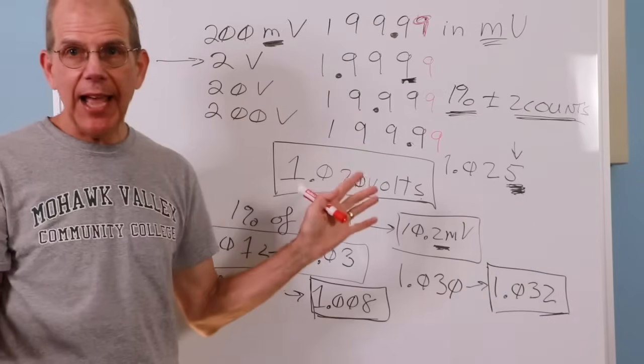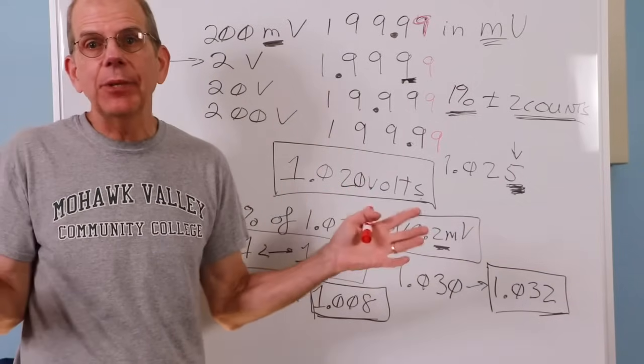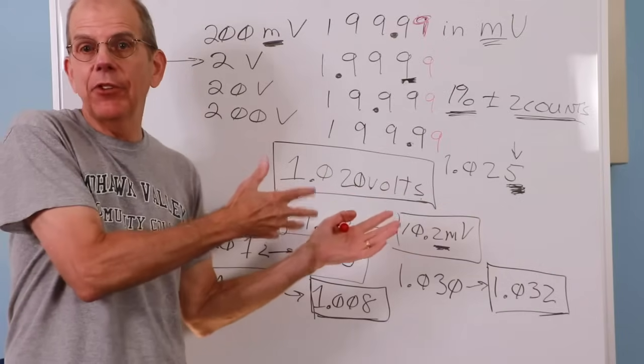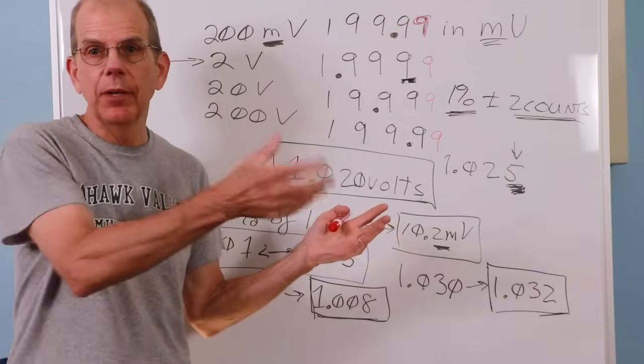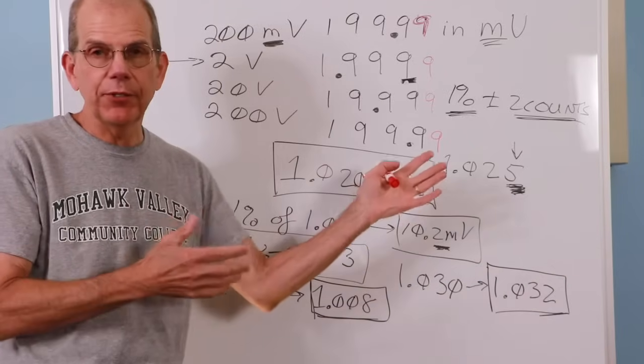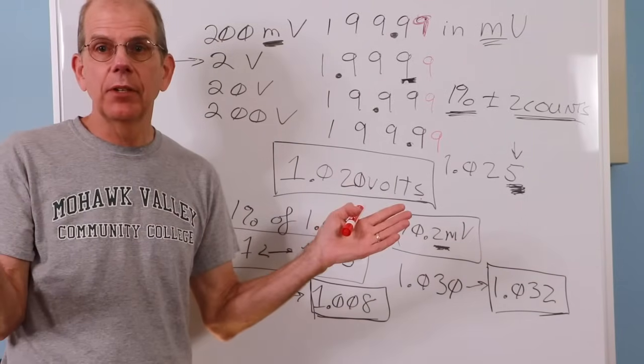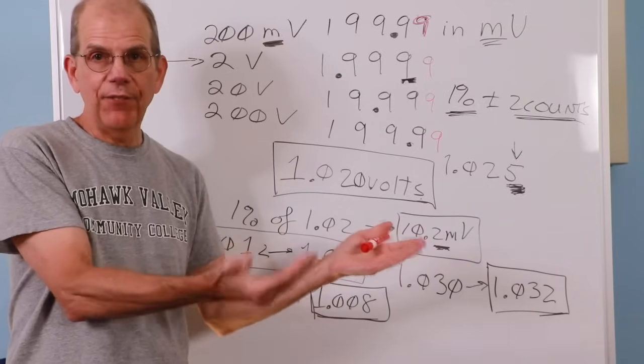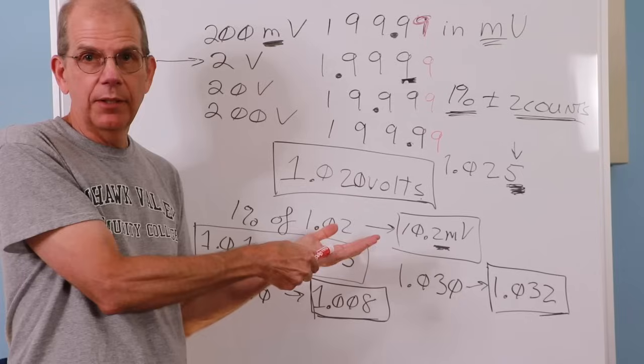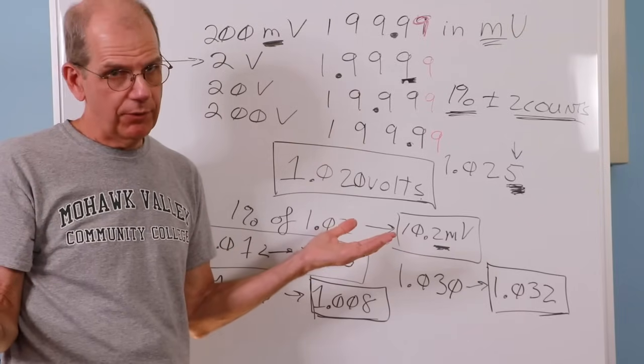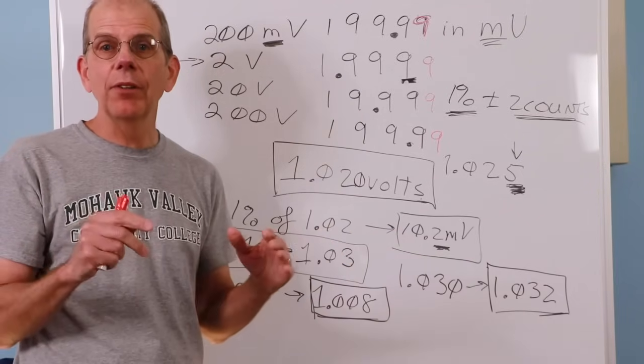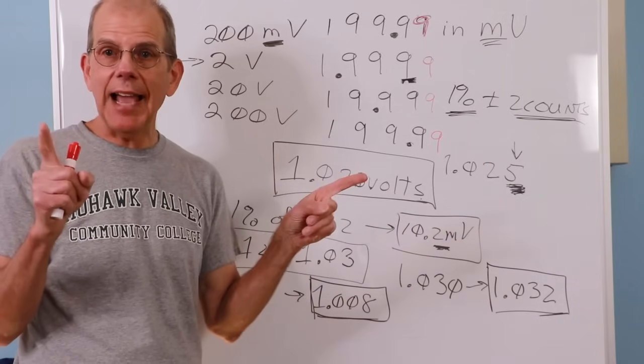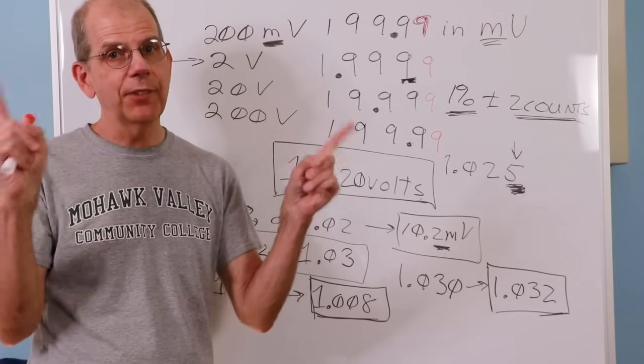Okay, so given that, is there anything else we have to worry about with our meter as far as taking our measurements so we can record them, verify, you know, theory and so forth? Well, there is. The active measurement itself can affect the measurement. Sounds a little strange. That's something called loading. We have to worry about meter loading. We're going to talk about that in the next video. See you then.